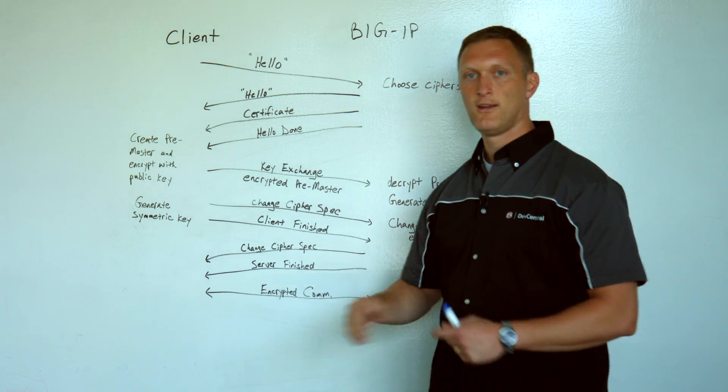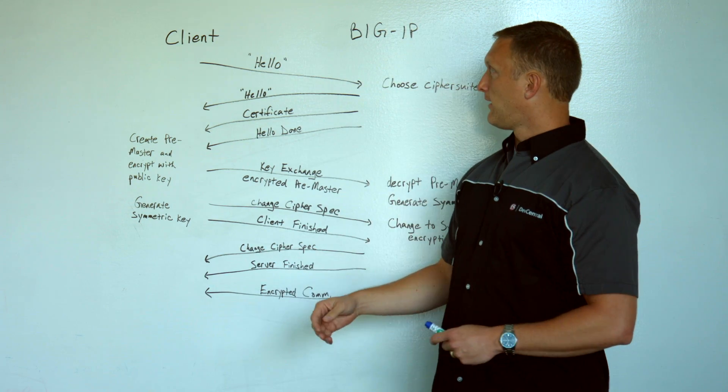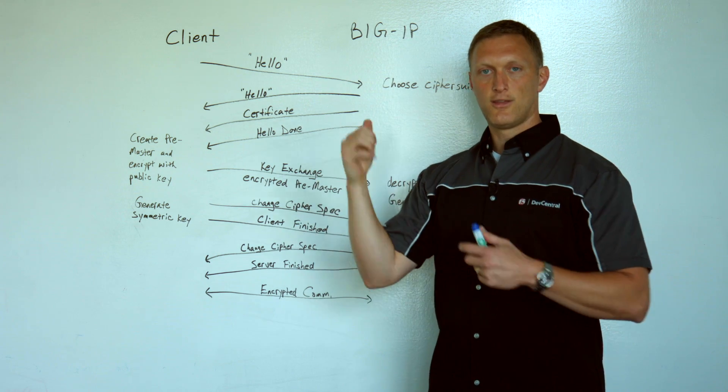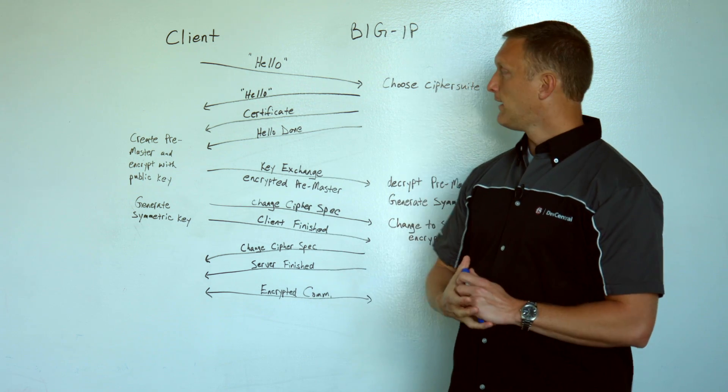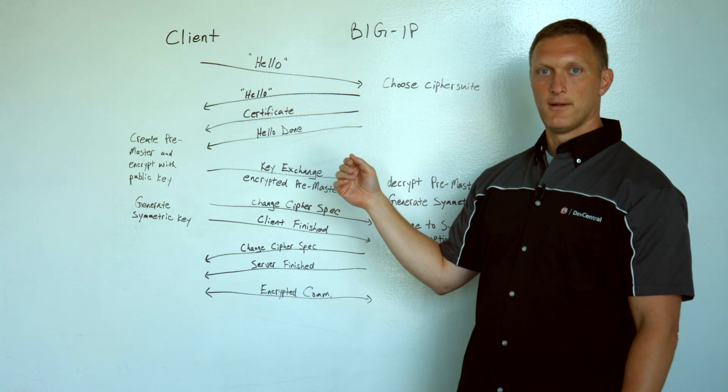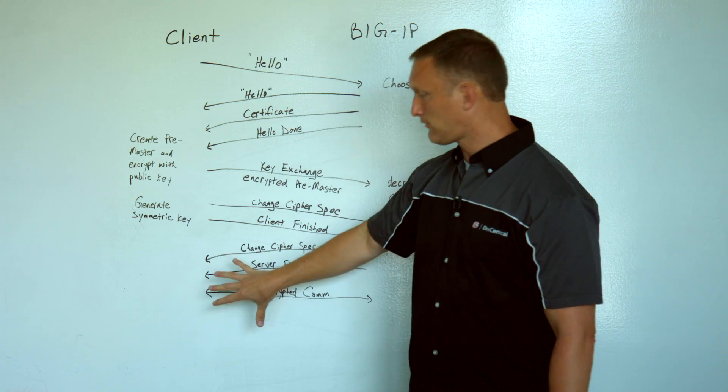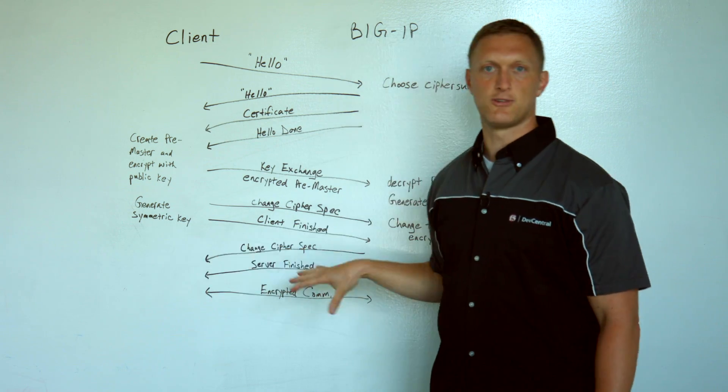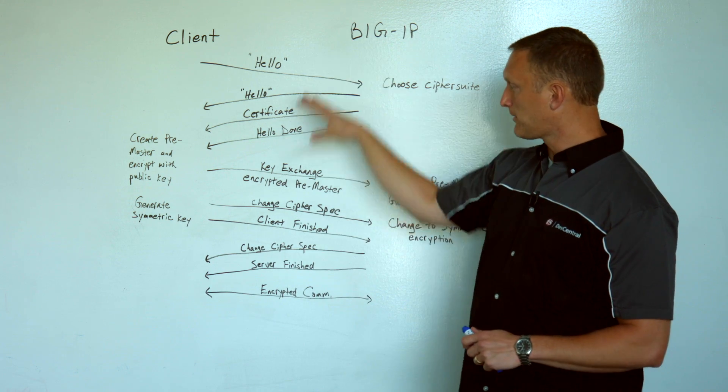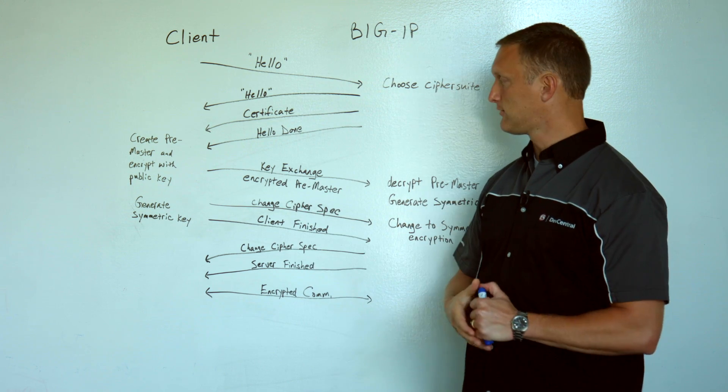Now you're down here to where you can encrypt all your communication. So essentially what's been done here is the client has established a secure line of communication with the BIG-IP, with the server. And the fascinating part about this is that it's been done with this asymmetric encryption that then leads to symmetric encryption capability. So it's important sometimes to know what happens through the process here, through the steps of a TLS handshake.